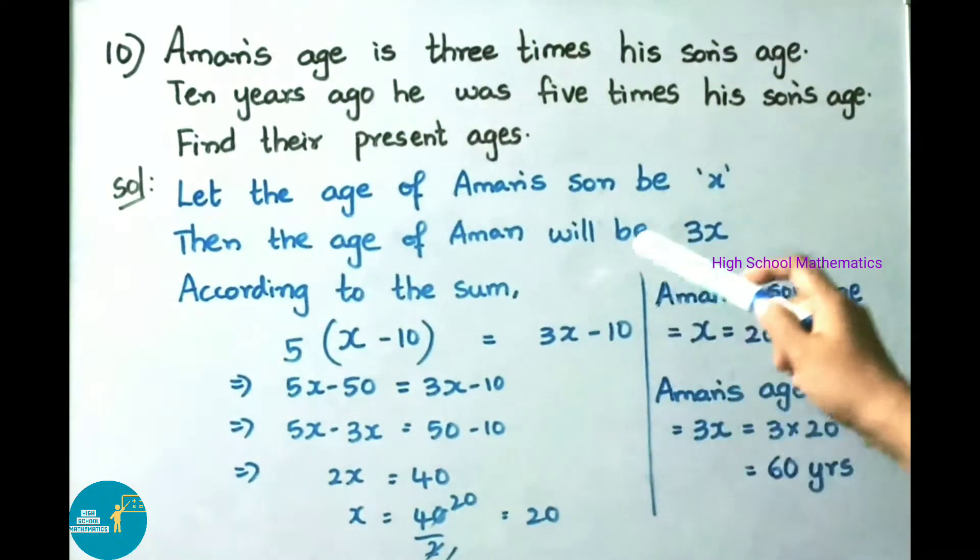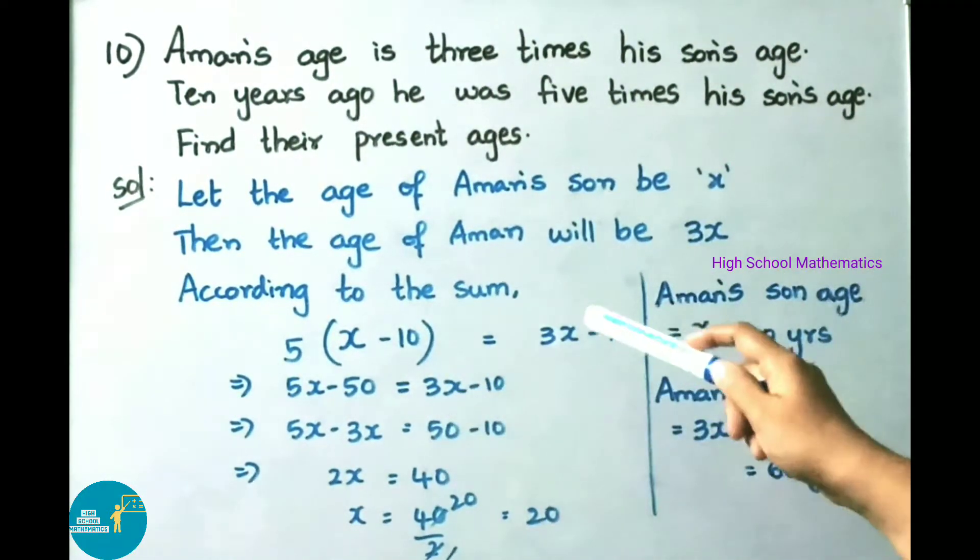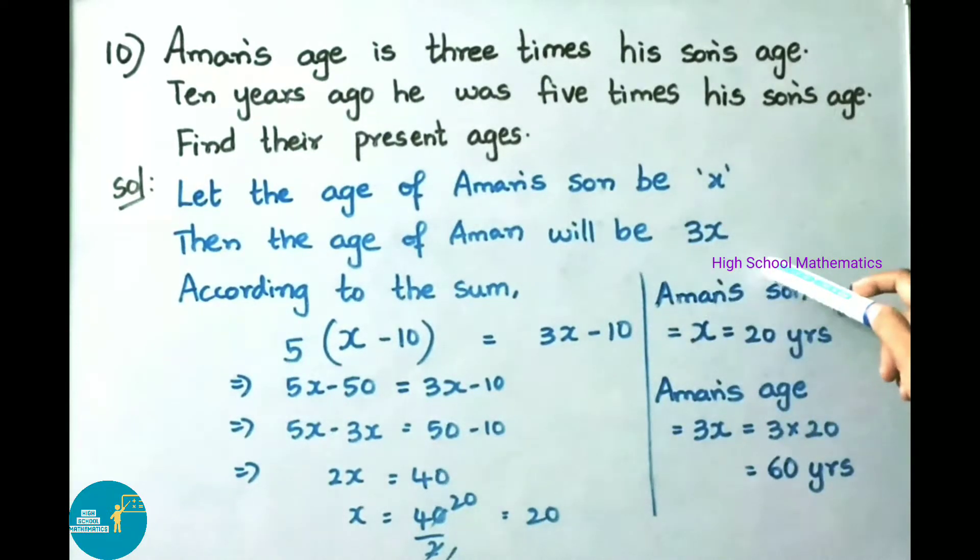Let the age of Aman's son be x. Then, the age of Aman will be 3x. As they are given in the question, his age is 3 times his son's age, Aman's age will be 3x. According to the sum,